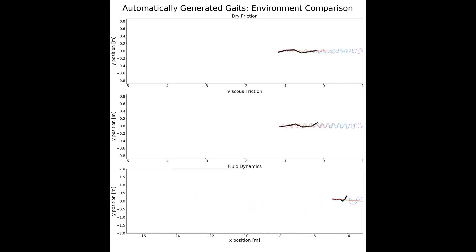For example, the gaits produced in the fluid dynamics environment make significantly more use of the tail than gaits in dry or viscous friction environments.